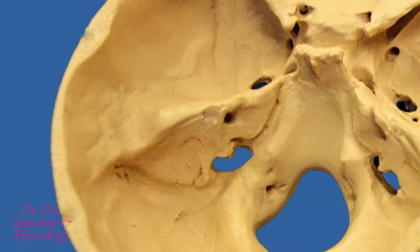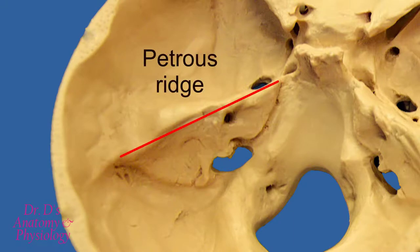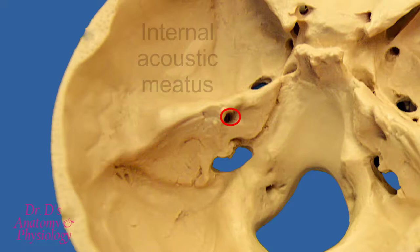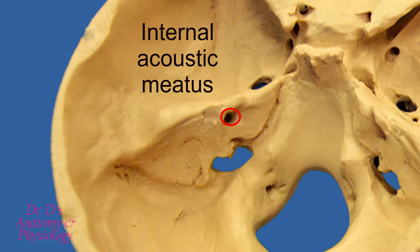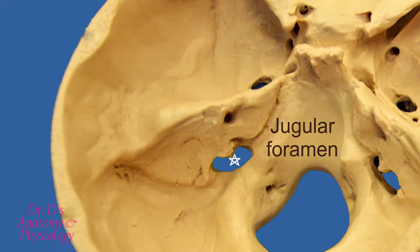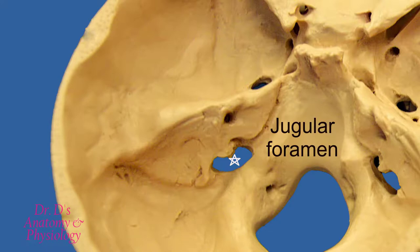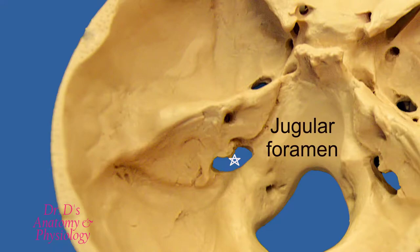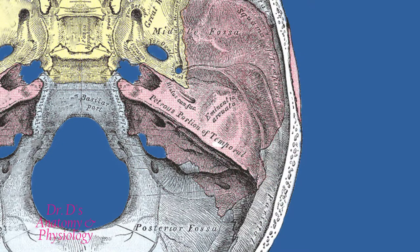Here is a better view of the posterior surface showing the petrous ridge and the internal acoustic meatus — also known as the internal auditory canal. We also get a better view of the jugular foramen, which is a fairly large opening. The jugular fossa of the temporal bone joins with the jugular notch of the occipital bone. It allows three cranial nerves to exit the skull, and it is also where the sigmoid sinus becomes the internal jugular vein as blood drains from the skull and descends down.